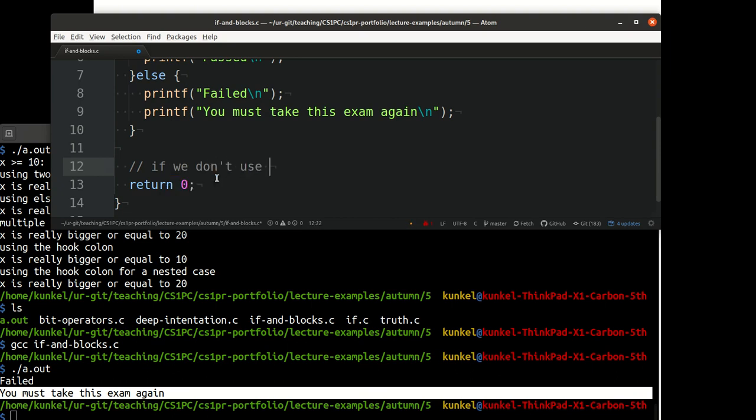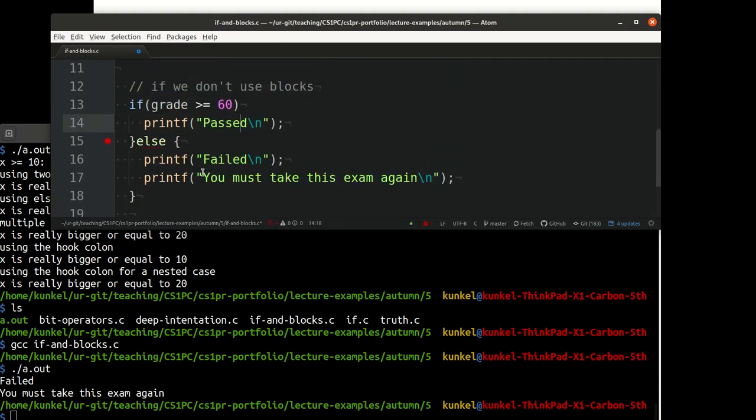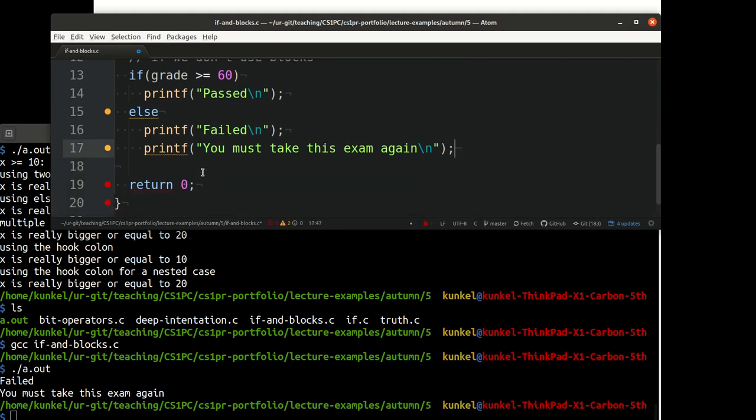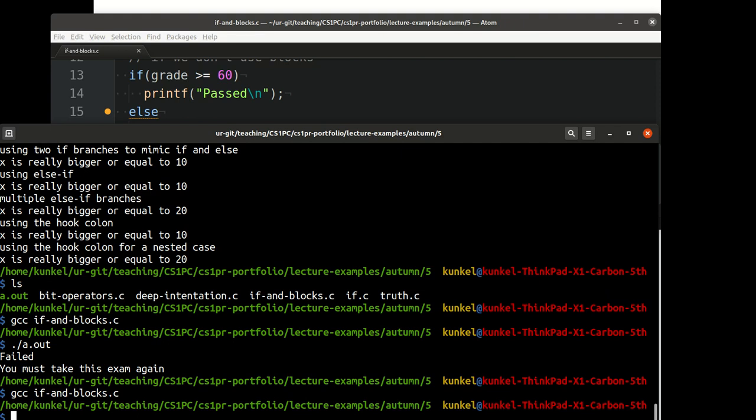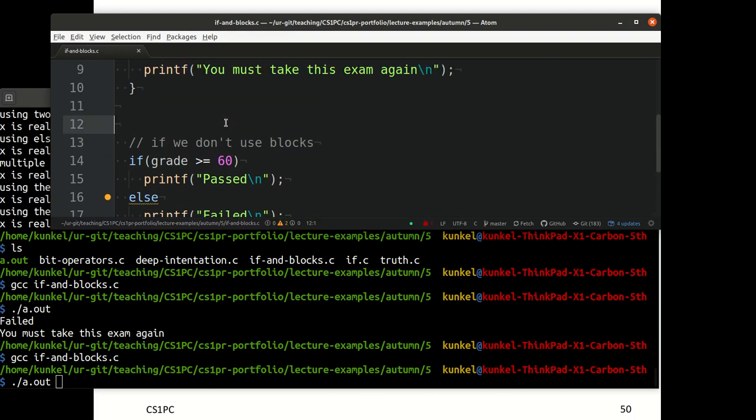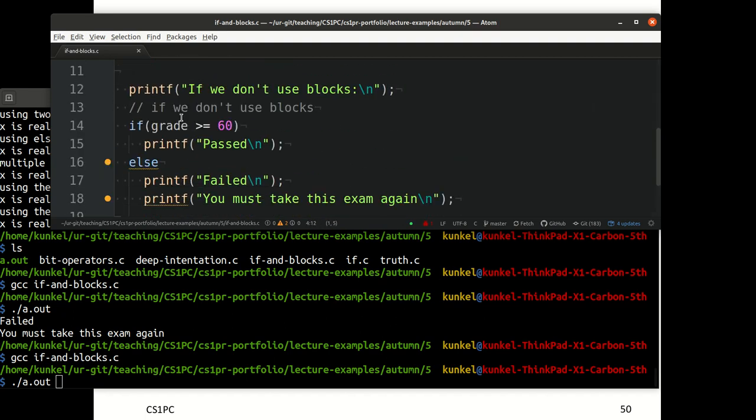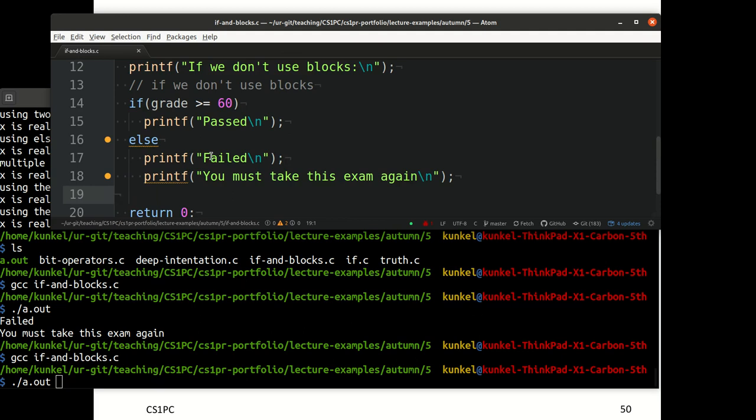Now if we don't use blocks, let's try this. What will happen? I remove the blocks. This should actually compile. It will run. What will it now print? Just let me add another statement: if we don't use blocks. What will it print? Think about it. Grade is still 40. That means the value is still below 60, so we will print failed. But what happens with this statement? Will it print it or not? Think about it for a second. Make your educated guess.